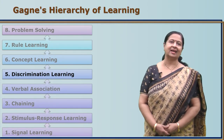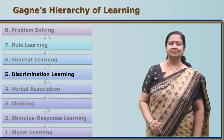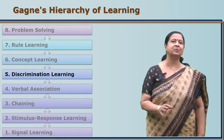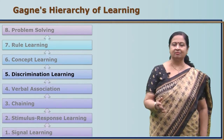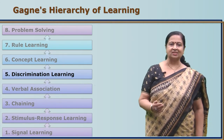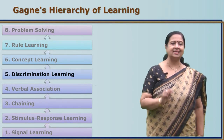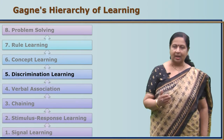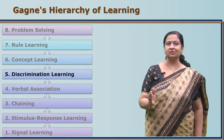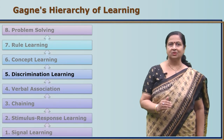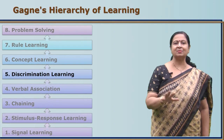The next higher-order learning is discrimination learning. Here we are able to discriminate between the different flowers we see, between the different animals we see. For example, in a flower show, a child will be able to say these are roses, these are lilies, these are dahlias. Among the animals, these are donkeys, these are horses, these are cows. So if you are able to discriminate between similar stimuli, this is a next higher-order of thinking.